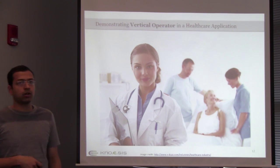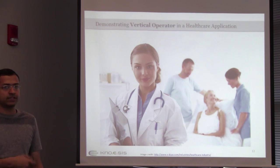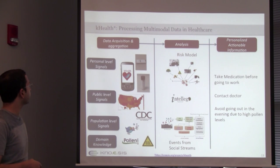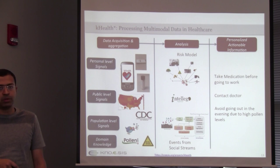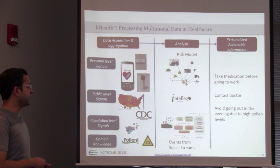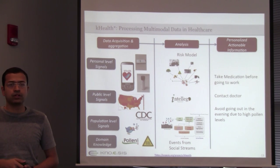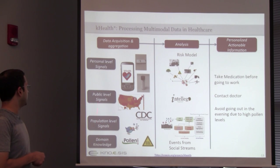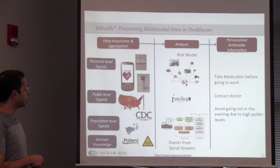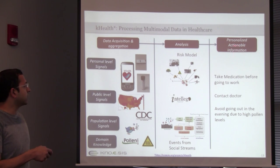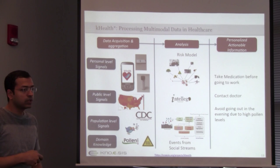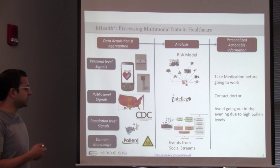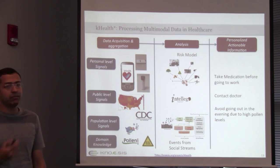Now let me move on to vertical operators. K-Health is one of the applications we have built, used in different contexts like asthma, ADHF (acute decompensated heart failure), and GI, but I'll be focusing on the asthma use case. K-Health takes different levels of abstractions — sensor data at a personal level, public level signals, population level signals, and domain knowledge of asthma — generates events from all that data, and the final goal is to provide actionable information. The reasoning component is called IntelliGo, which is one implementation of vertical operators.